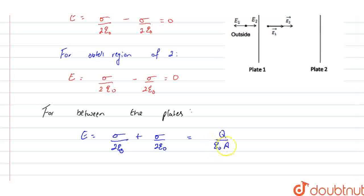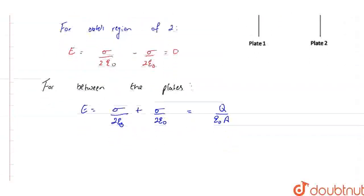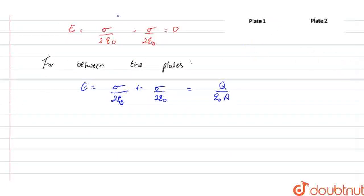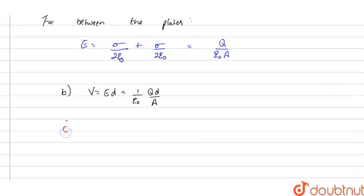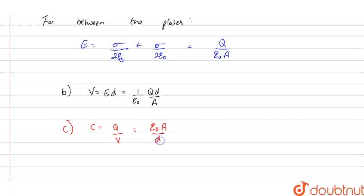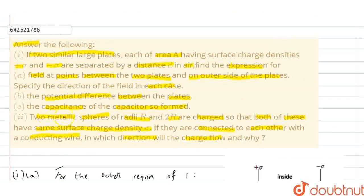The direction of electric field is from the positive to the negative plate. For part (b), the potential difference V is given as V equals E times d, which equals 1 by epsilon naught times Q times d by A. For part (c), capacitance is given by Q divided by the potential difference between the plates, which gives us epsilon naught times A by d.